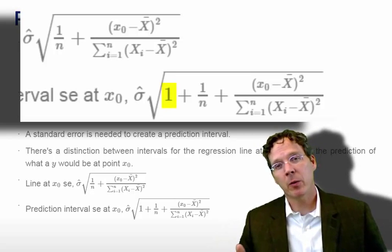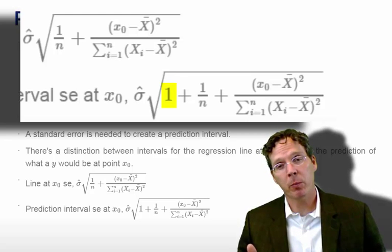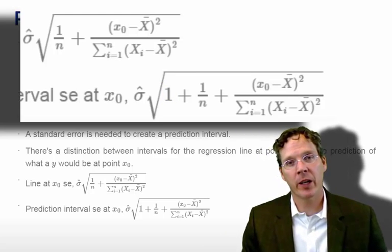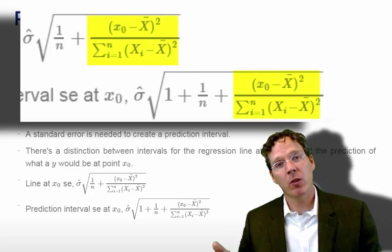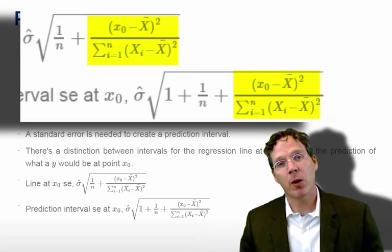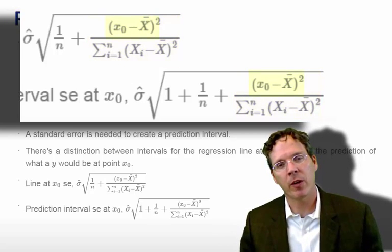If we're predicting a new y, then we have this added 1 out front. So we get a wider interval if we want to predict a new value at a specific point versus trying to predict what the regression line is at that point. But let me also focus on this very end term that is in both equations, x0 minus x bar divided by the top of the variance of the x's.